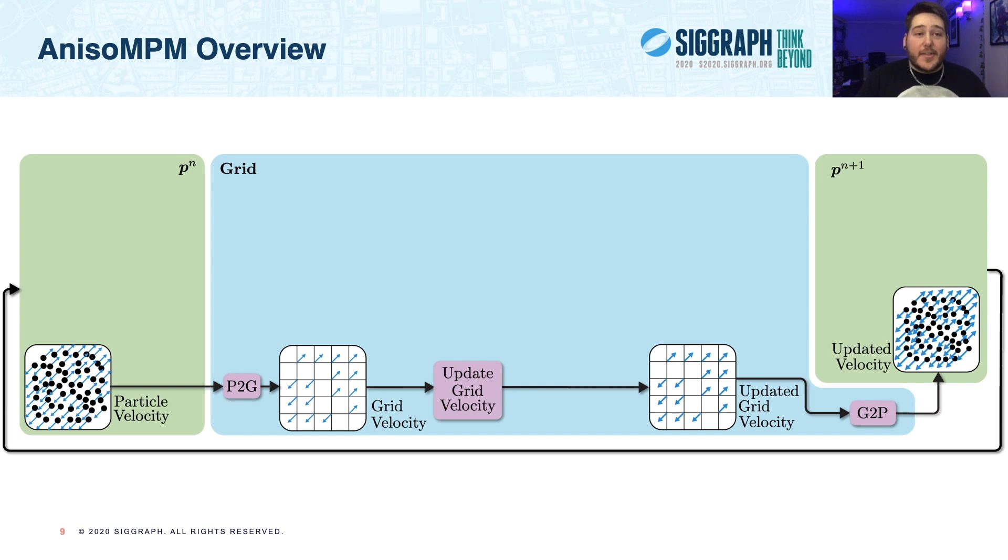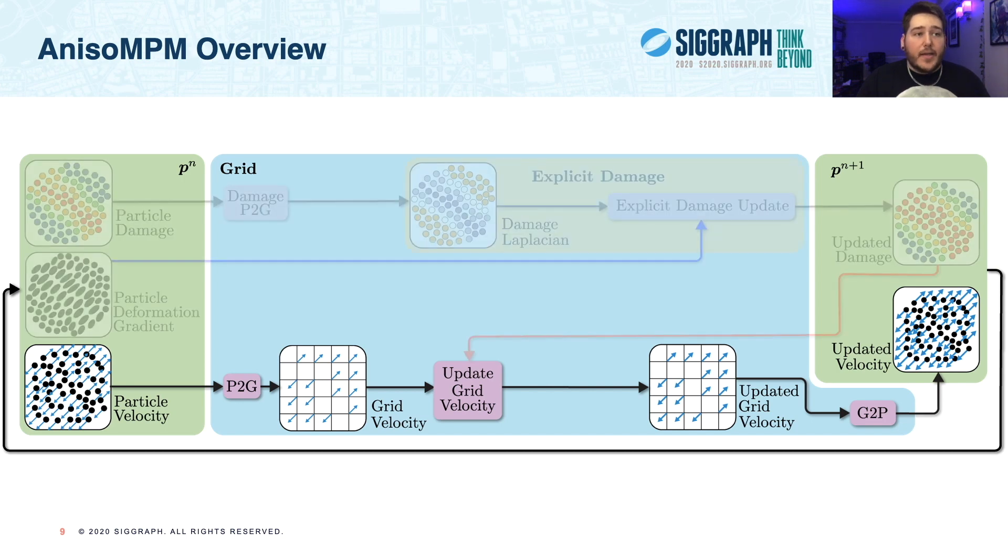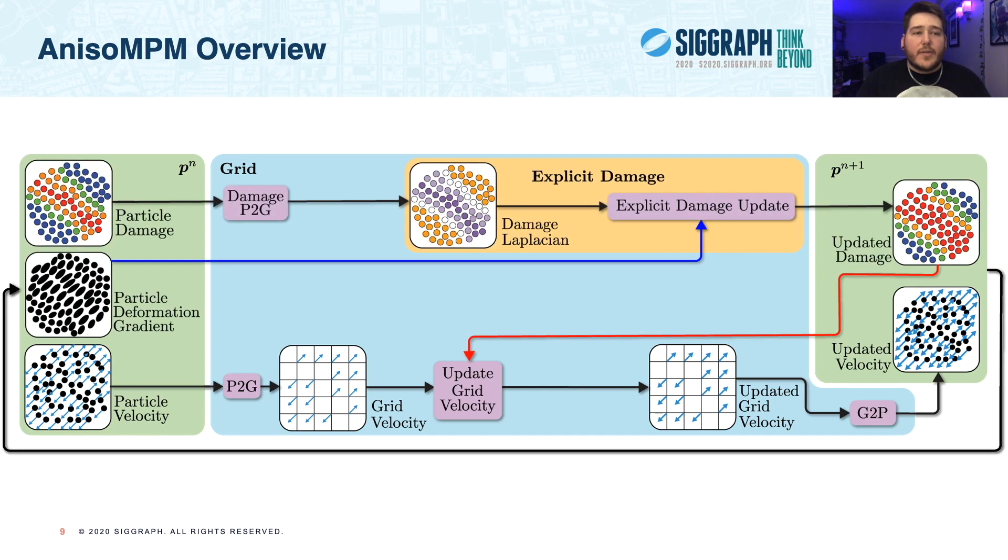Now, before delving into anisotropic damage, let's overview the NISO-MPM dataflow to give some intuition about how these pieces work together. We start with the basic MPM data pipeline, where we transfer damage to the grid, compute forces and update velocity, and then transfer these new velocities back. And here we see that NISO-MPM utilizes a staggered integration scheme and introduces a second data pipeline for damage transfer and evolution. Note that so far this is just a pipeline for explicit damage.